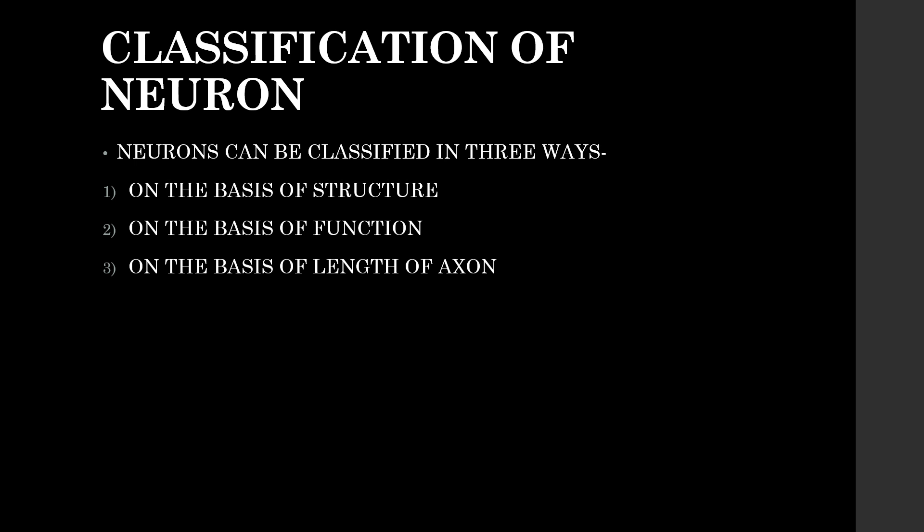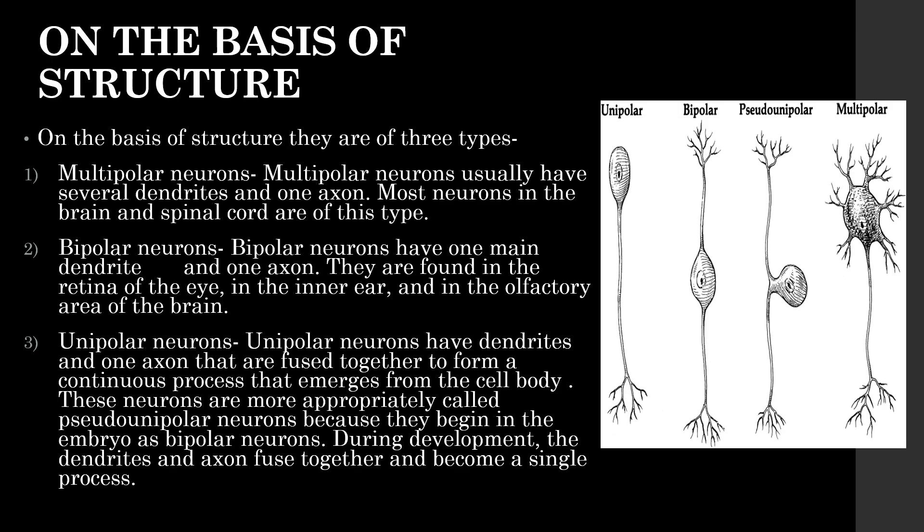Classification of Neurons. Neurons can be classified in three ways: on the basis of structure, on the basis of function, and on the basis of axon length. On the basis of structure, they are of three types. Multipolar neurons usually have several dendrites and one axon; most neurons in the brain and spinal cord are of this type. Bipolar neurons have one main dendrite and one axon; they are found in the retina of the eye, the inner ear, and the olfactory area of the brain.